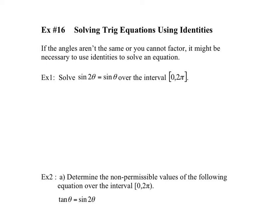So what situations would this have to happen? Well, if the angles aren't the same, there's a case here. This is sine of double the angle, and this is sine of the angle. Those angles aren't the same. So, for example, if theta was 20 degrees, this would be 20, and this would be 40. So you're going to use identities there.